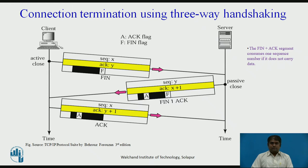Three-way handshaking for connection termination: the client TCP, after receiving a close command from the client's process, sends the first segment — a FIN segment (finished segment) — in which the FIN flag is set. The FIN segment can include the last chunk of data sent by the client or it can be just a control segment. The FIN segment consumes one sequence number if it does not carry data. The server TCP, after receiving the FIN segment, informs its process of the situation and sends the second segment — a FIN plus ACK segment — to confirm the receipt of FIN segment from the client. The client TCP then sends the last segment, an ACK segment, to confirm the receipt of FIN segment from the TCP server.